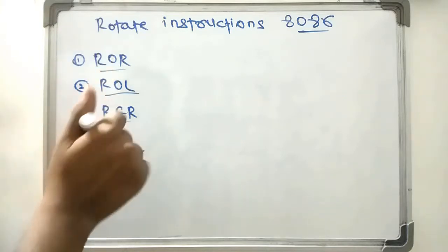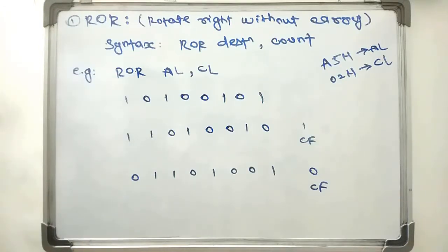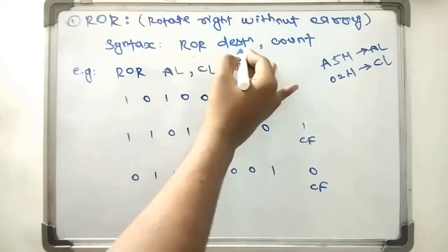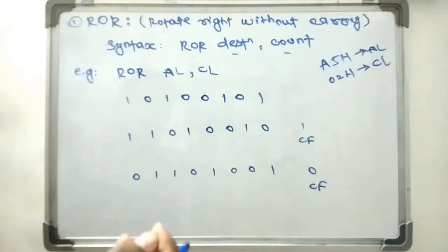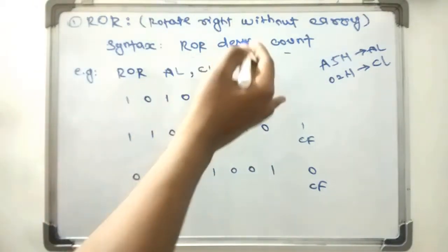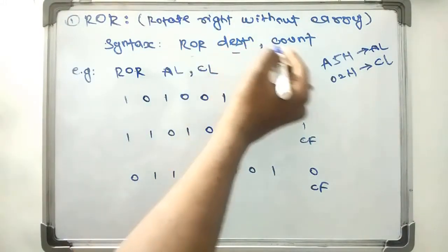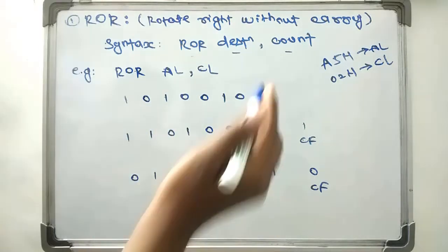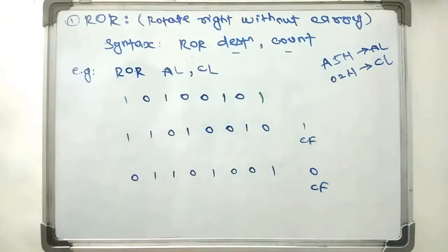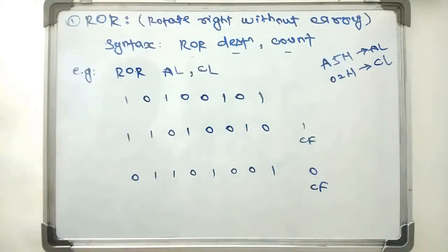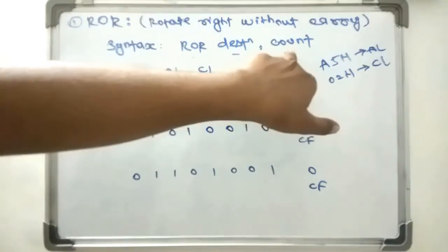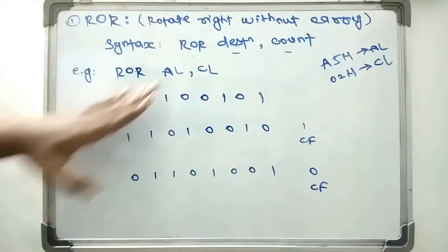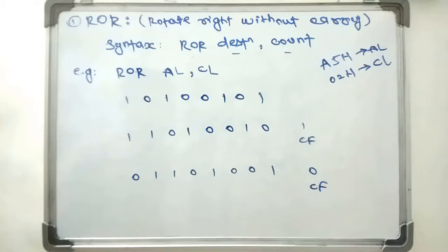First we will learn about ROR in detail. ROR means rotate right without carry. The syntax is ROR destination, count. Destination specifies the register whose content will be rotated. Count specifies how many times the content will be rotated towards the right. For example, if we write two, the content will be rotated two times bitwise towards the right.